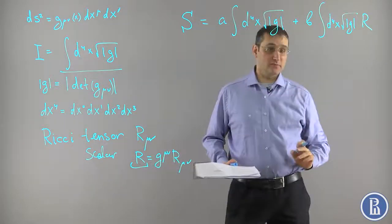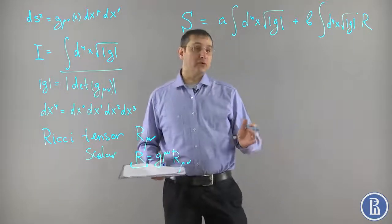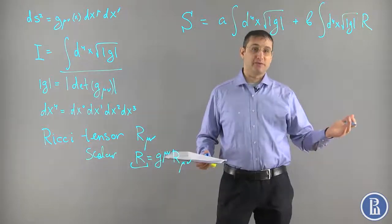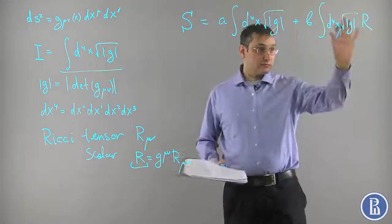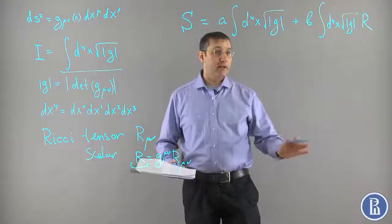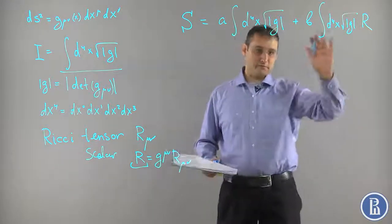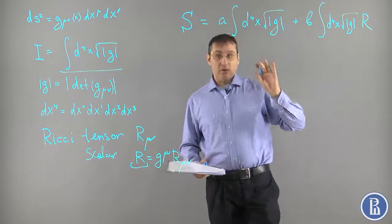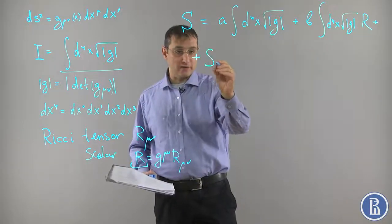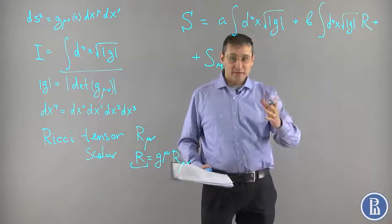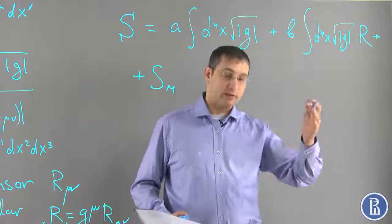The constants A and B follow solely from experimental data and cannot be obtained from the symmetry observations we have been applying so far. This action describes only gravity — it doesn't describe any matter or anything that carries energy. So we have to add to this a matter action: some action which contains matter fields or particles and describes their interactions with the metric, with gravity.